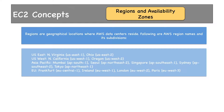In Asia Pacific, there are five regions: Mumbai, Seoul, Singapore, Sydney, and Tokyo. In the EU location, there are four regions: Frankfurt, Ireland, London, and Paris.